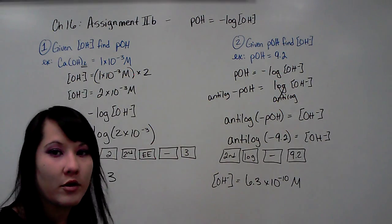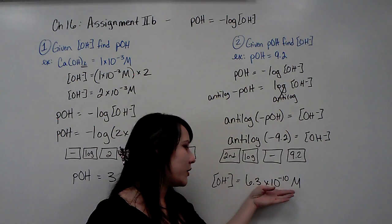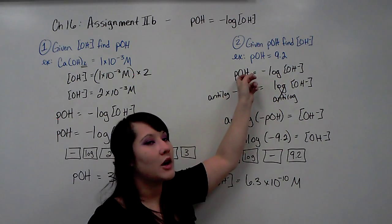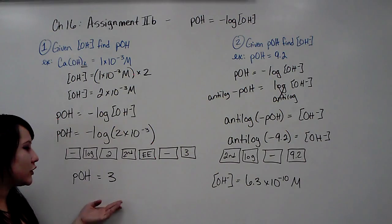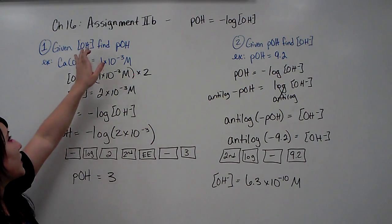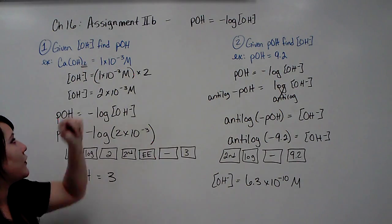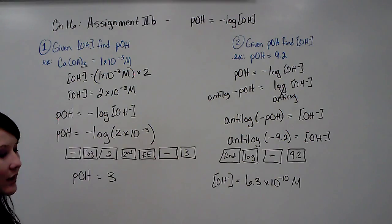Okay, remember that you can actually replace 6.3E negative 10 into the original equation and solve it for the POH to verify that you got the right answer. You can do the same thing. For the first one, you can plug in the, you can take the anti-log of 3 in order to test to see if you got the correct answer by checking to get the original answer once again.